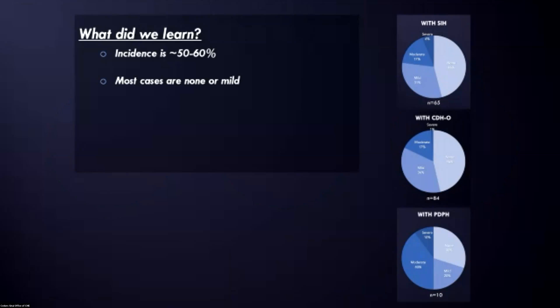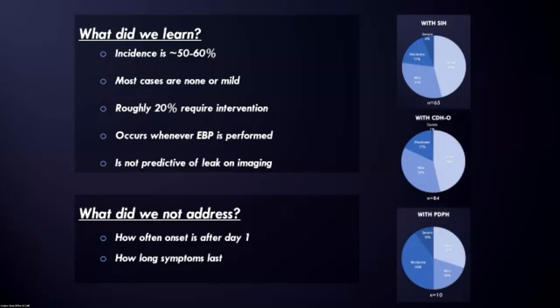What I tell folks is that the incidence of rebound intracranial hypertension is about 50% to 60%. But most people who get epidural blood patches are either going to have no rebound or mild rebound, self-limited that we don't need to treat. About 20% are going to require some sort of intervention, and that's usually starting off with acetazolamide or methazolamide, which you'll hear more about from our next speakers. And then this really occurs whenever epidural blood patches performed, regardless of whether or not we see a leak on imaging. So it's probably, to some extent, some nonspecific effects of compressing the epidural space with blood.